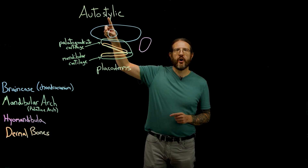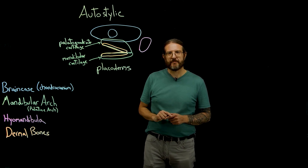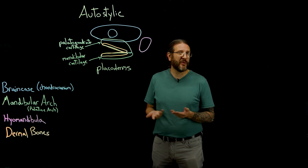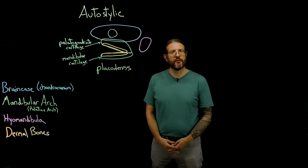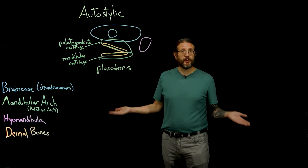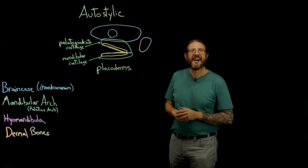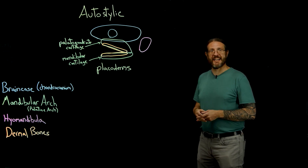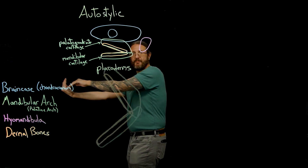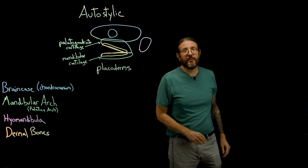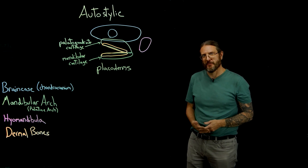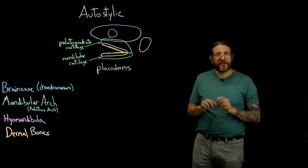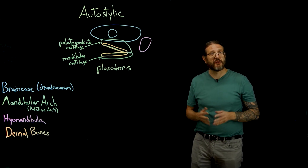This early type of jaw is called autostylic. The autostylic jaw was a perfectly functional and powerful jaw, but it was a bit limited in its range of movement. The lower jaw could swing open and swing closed, and that was about it. If you've ever played classic video games, Pac-Man provides a pretty good analog. This motion of the jaw was just fine for gobbling up other fishes or power pellets, but it wasn't very subtle or sophisticated. But after this, something very interesting evolves.